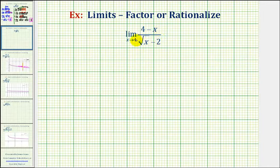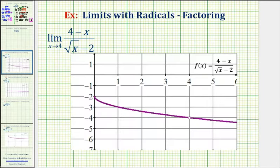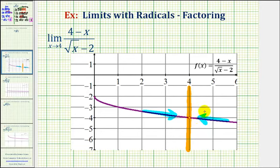So to see if this limit exists, let's start by graphing our function. Here's the graph of the function, here's x equals four. Notice as we approach positive four from the left side and the right side, we are approaching the same function value and therefore this limit does exist. It also appears this limit is going to equal negative four, even though there's a hole at x equals four, which means this function is undefined at x equals four.